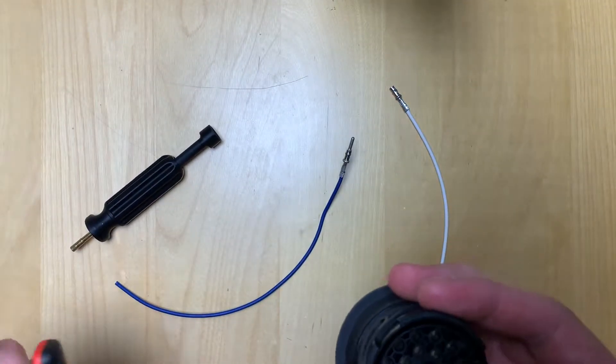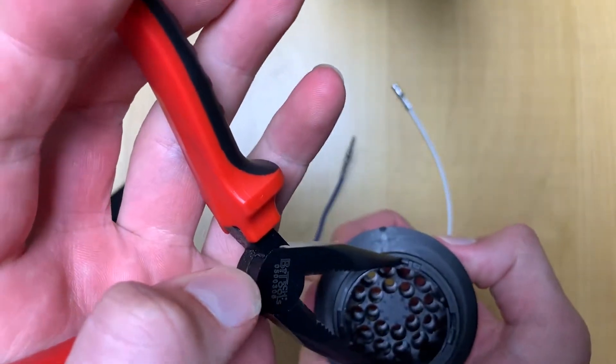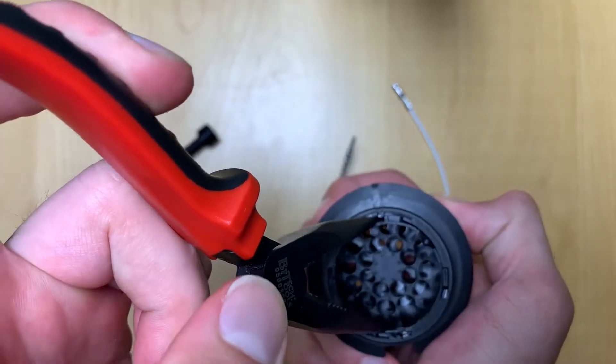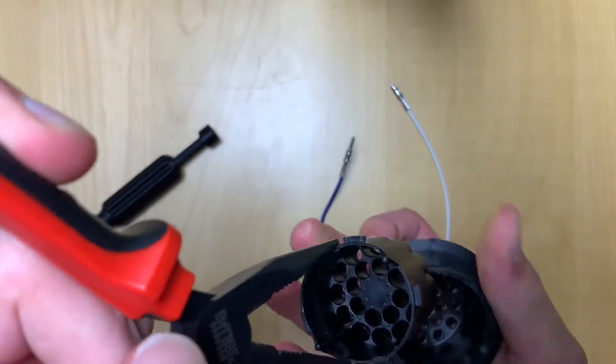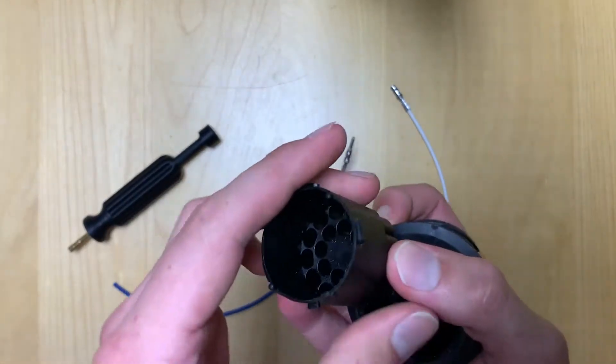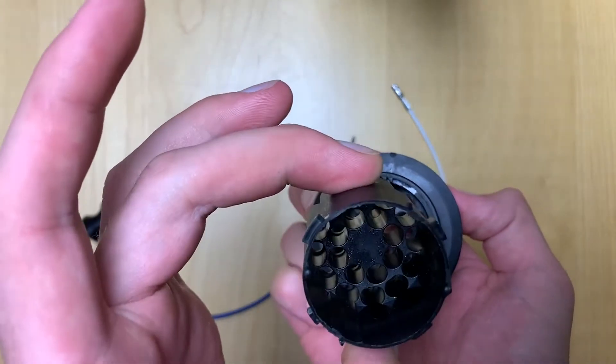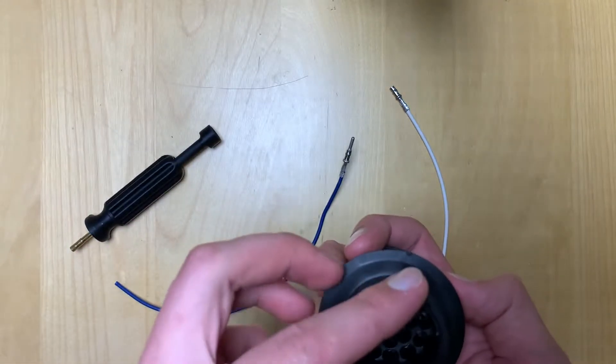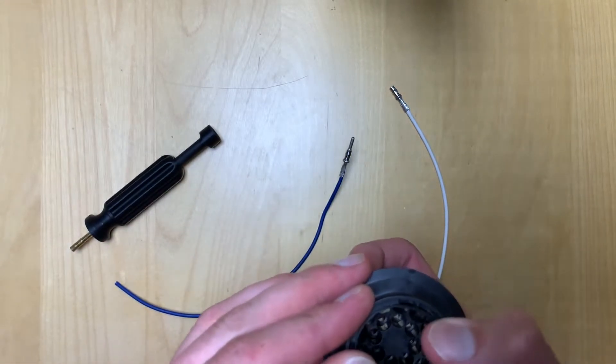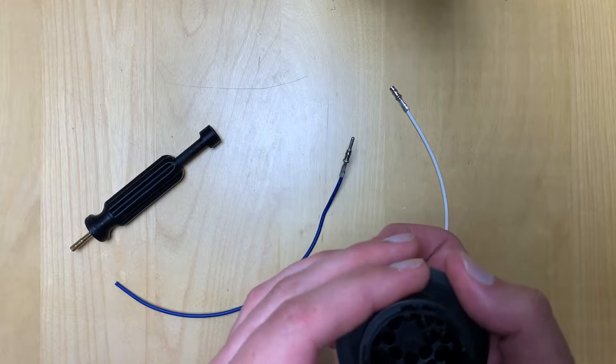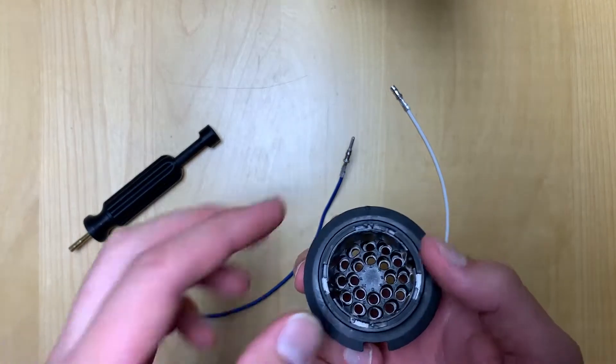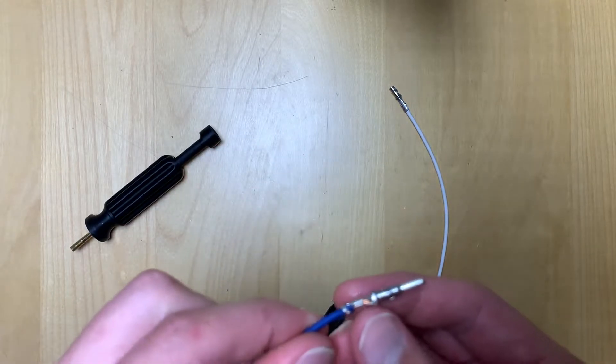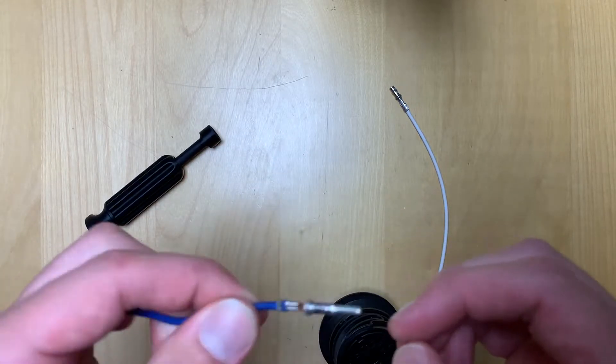If you rotate all the way counterclockwise, you can see there's a two-piece design to this connector. When you go all the way clockwise, it locks the connector in place. It's very important that you unlock your connector, otherwise they're not going to go anywhere. When you reinsert your new connector, you can go ahead and lock it if you want to. These pins are really robust and they're not going to come out unless you de-pin them.